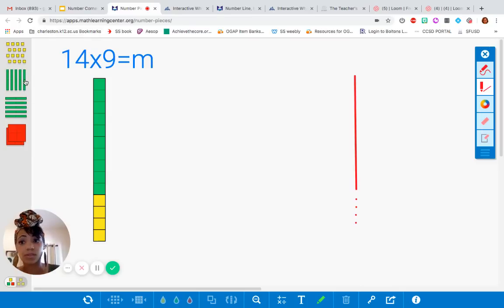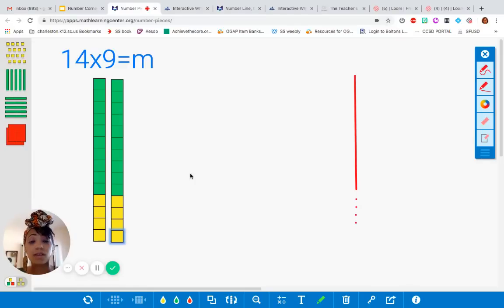Okay. So since we know we're not done, I need to create another set of 14. The question is, how many sets did we say we needed? Remember, our equation is 14 times 9. Am I done? No. So go ahead and pause this video so that you guys can complete your sketch. We have 14, and we need 14 how many times? 9 times. You're right. Go ahead and pause this video.